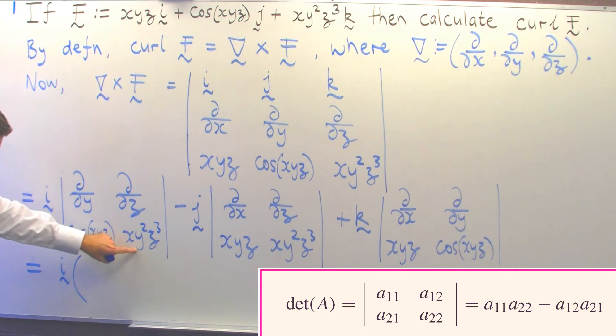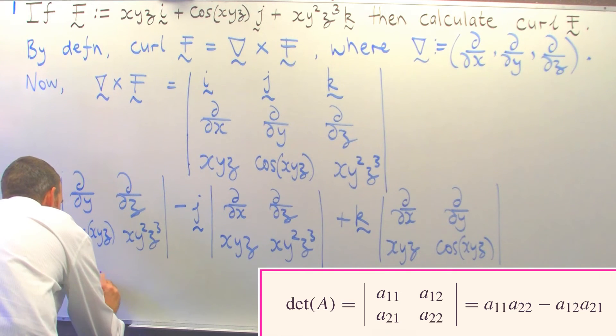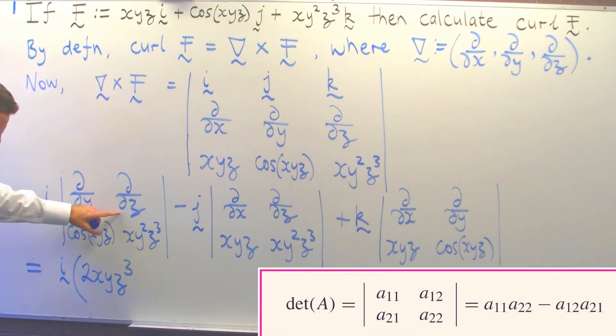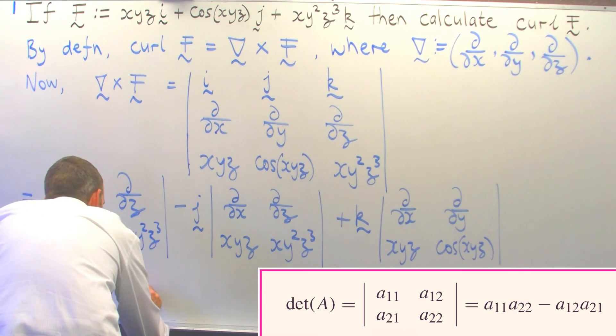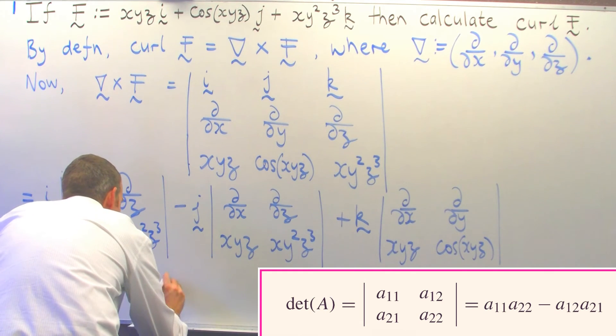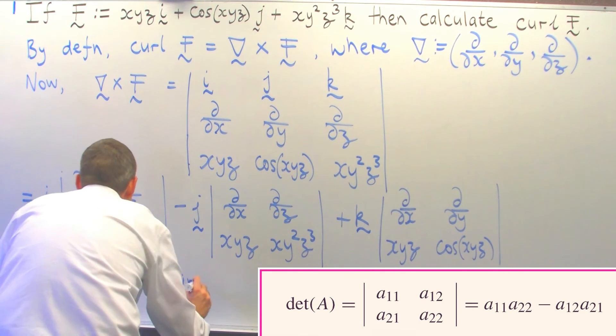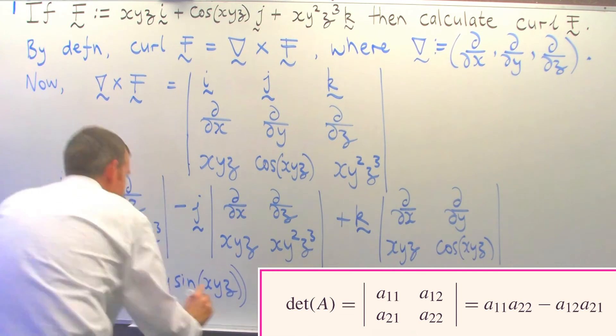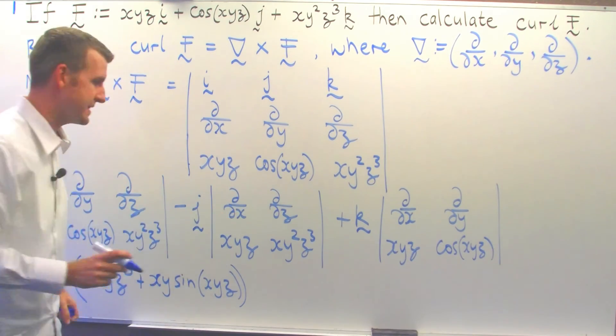So d/dy of this will give us 2xyz³ minus d/dz of this, so we get xy·sin(xyz). Now we move on to the next one and expand that one as well.